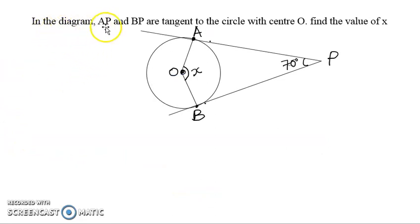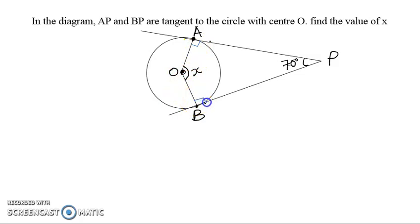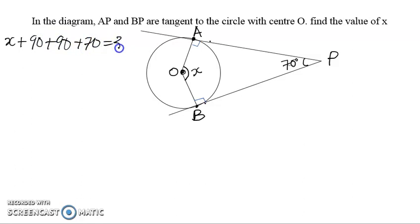In the diagram, AP and BP are tangents to the circle with center O. We are asked to find the value of x. Since the center goes to the point of contact of the tangent, that means the angle there is 90 degrees. The same applies on the other side — that point is also 90 degrees. We have a four-sided shape, a quadrilateral, so the total sum is 360 degrees. So we have x plus 90 plus 90 plus 70 equals 360.